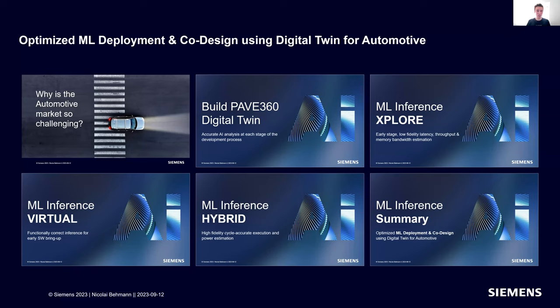Today, I'm excited to give you a glimpse into the full user journey with ARM IP and ARM software libraries, using the PACE 360 stack optimized for automotive and machine learning applications, where we build a digital twin throughout all different fidelities. We'll start with a brief intro into why automotive is special, then dig into how to build a digital twin, and walk through three phases: exploration, virtual, and hybrid, before summarizing. Please ask questions and drop them in the Q&A box.